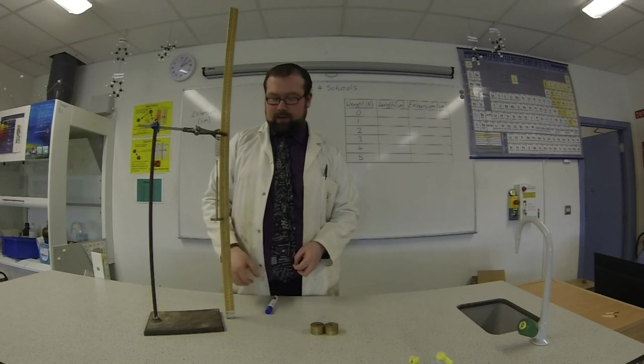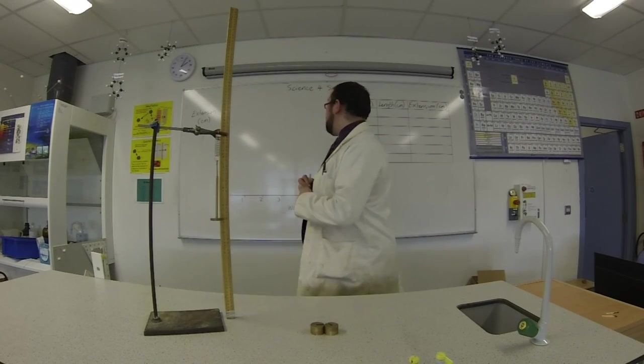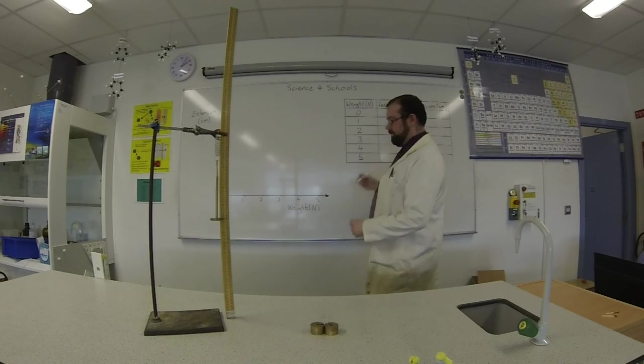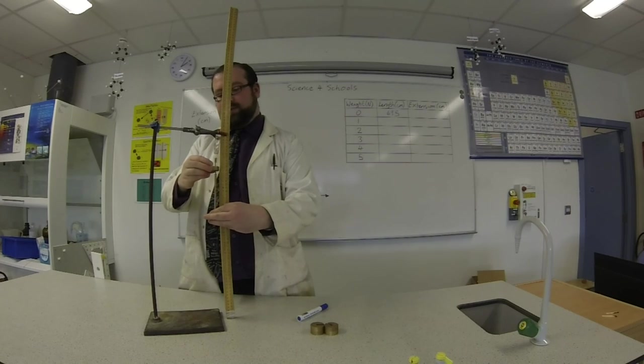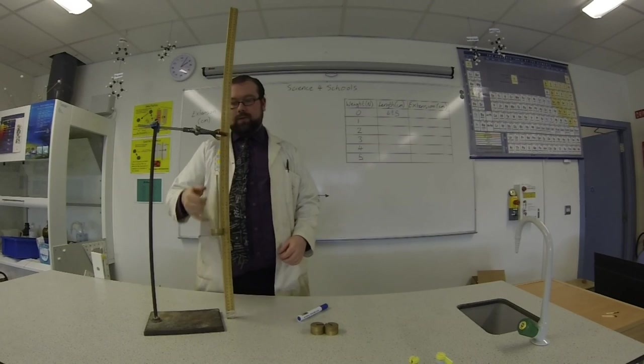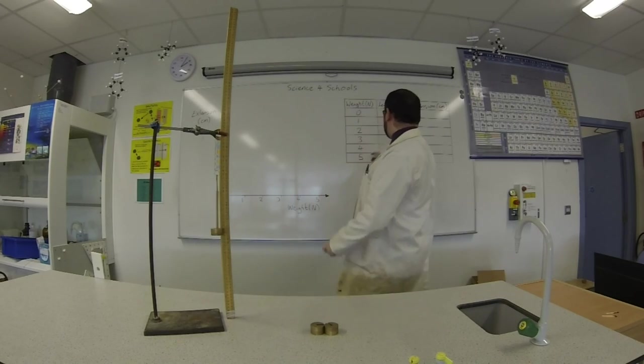So here we go, with no weight on, we can measure it. It's at 69.5 currently on the ruler. If we add on one of these weights, so it's one Newton more than it was. The spring is now a bit longer and it's currently at 73.5 centimeters.